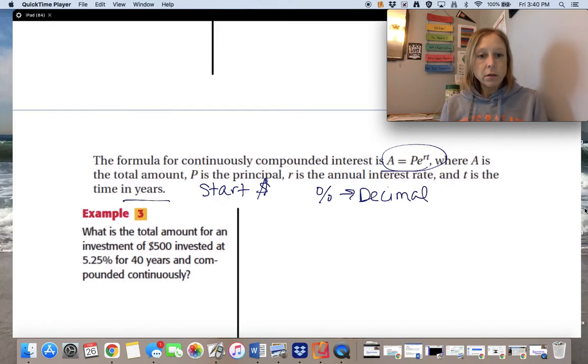Okay. Let's read the question. What is the total amount for an investment of $500, invested at 5.25% interest for 40 years, and compounded continuously? So we're looking for the total amount A. We're given the principal P, the rate, and the time.